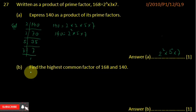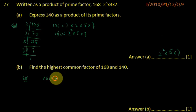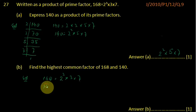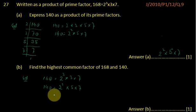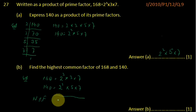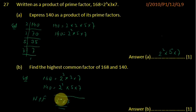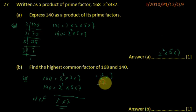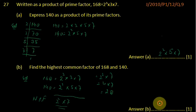In part b, we are asked to find the highest common factor of 168 and 140. 168 can be written as its prime factors: 2 cubed multiplied by 3 multiplied by 7, and 140 can be written as 2 squared multiplied by 5 multiplied by 7. In order to find the HCF, we take the common numbers with the lesser power. So 2 squared multiplied by 7 gives 4 multiplied by 7, which is 28. So HCF of 168 and 140 is 28.